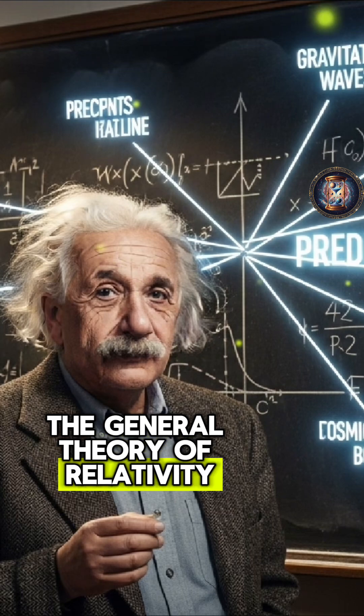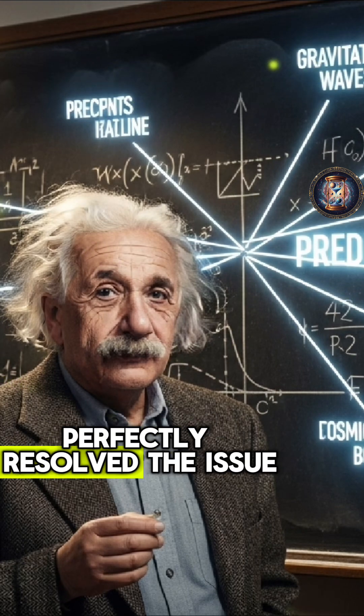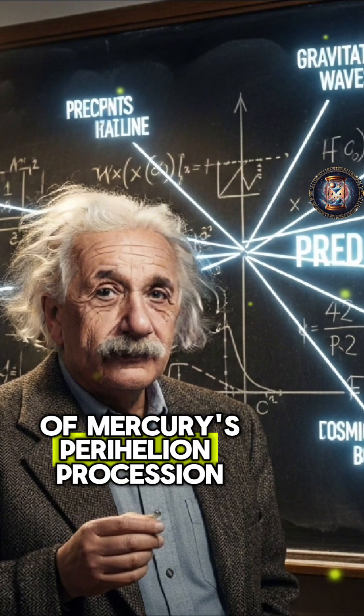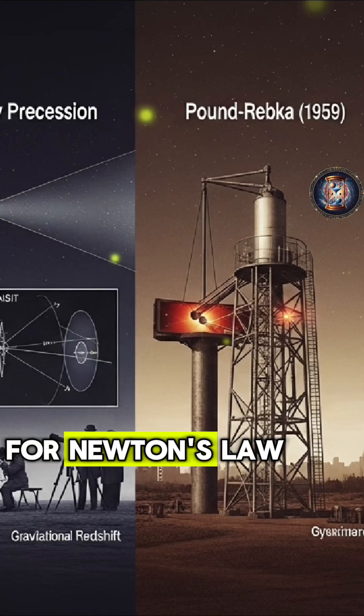The general theory of relativity perfectly resolved the issue of Mercury's perihelion precession, which was a mystery for Newton's law.